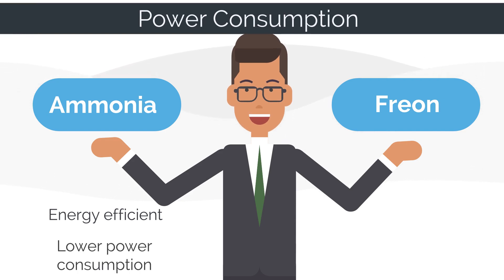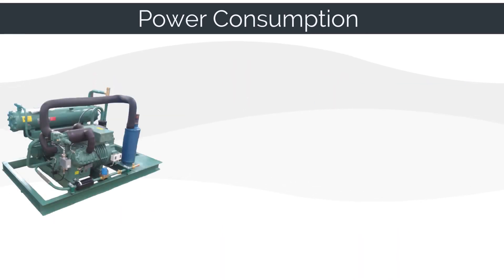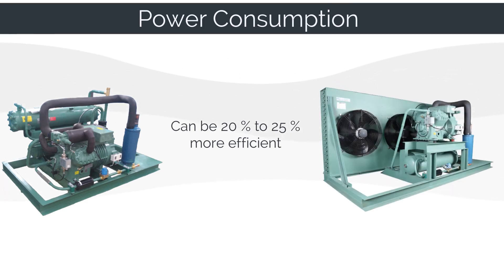At the same time, a well-designed Freon system can be more energy efficient with less power consumption than a poorly selected or designed ammonia unit. Further, you may also consider that a water-cooled Freon condensing system is about 20% to 25% more efficient than an air-cooled condensing unit system and fully automatic too.